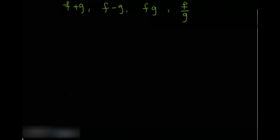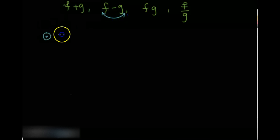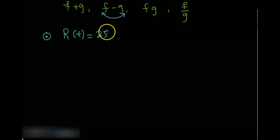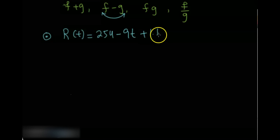The answer is yes. For example, I can show you an application of the difference of two functions. In a certain company, the revenue at time t is given by: 244 minus 90 plus 1.1t squared. This is the revenue at time t for a certain company.